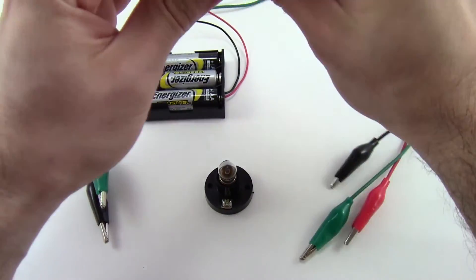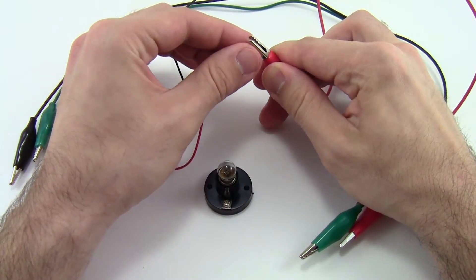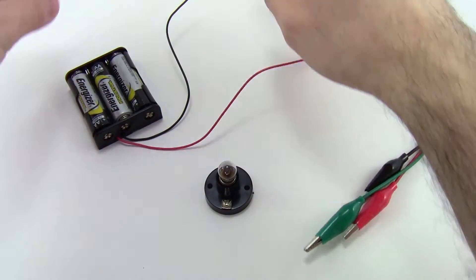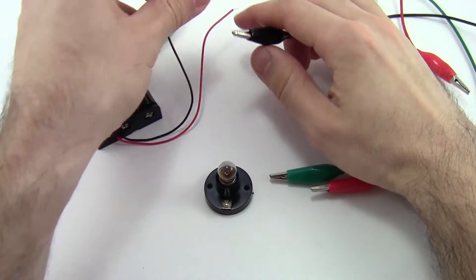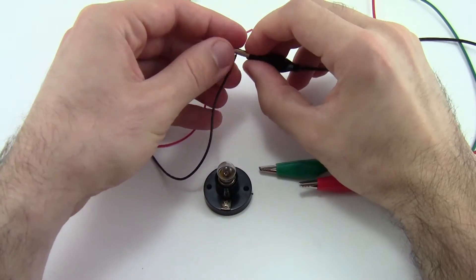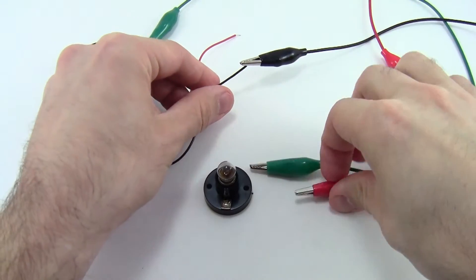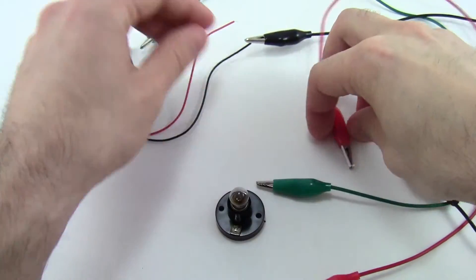So we're going to color code here. Take the red alligator clip and connect it to the red wire from the battery pack. Take the black alligator clip and connect it to the black wire. You can see these alligator clips will hold on kind of snugly, but if you pull too hard they will come off. So I lost the red one there. I'm going to reattach that.